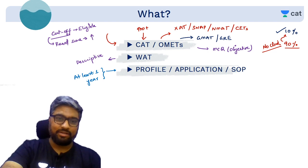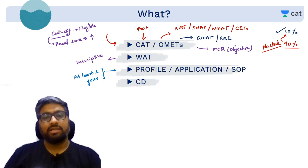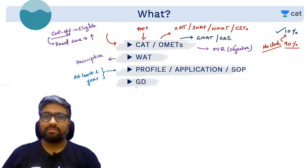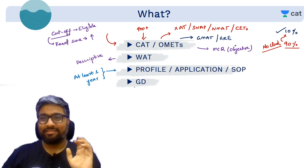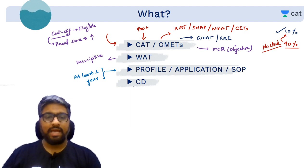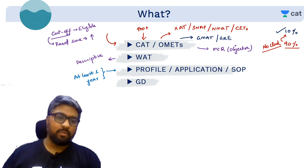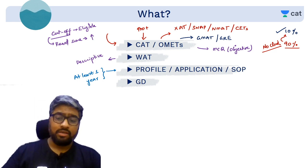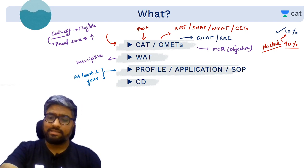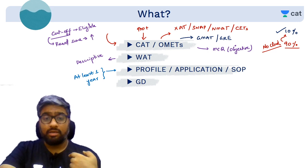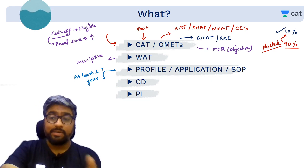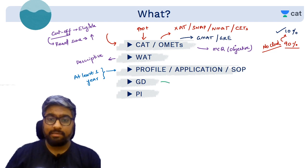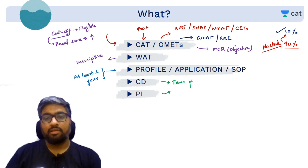After your profile or SOP, some colleges have a Group Discussion. Due to current circumstances, we're not sure how things will happen this year, but GD tests not just your communication skills but also how well you maintain yourself in a situation and express ideas in a group. Along with that, there will also be a Personal Interview — judging you as an individual — with dedicated sessions for GD and PI coming later.